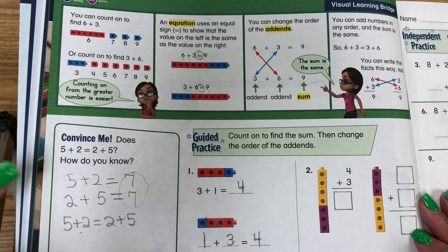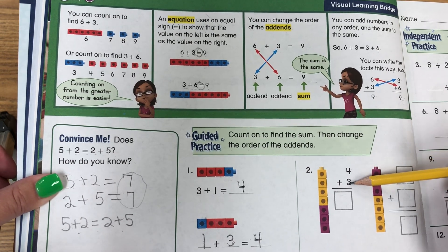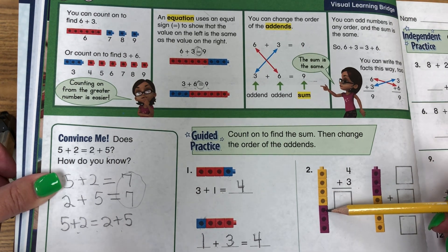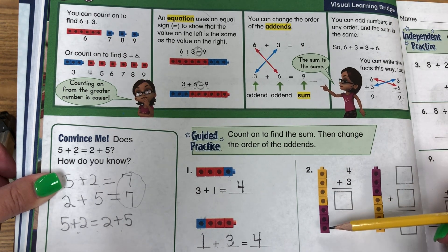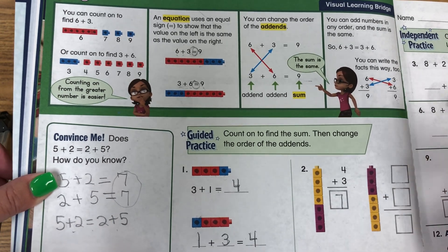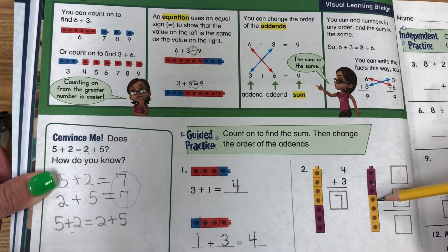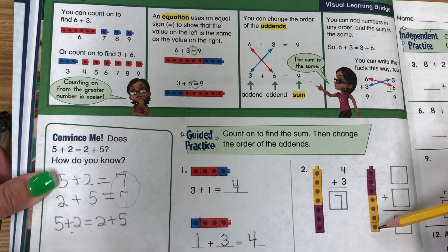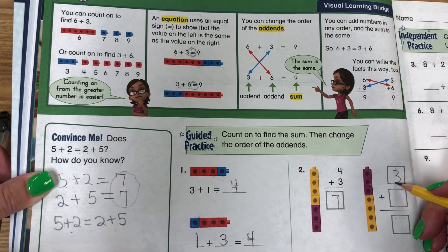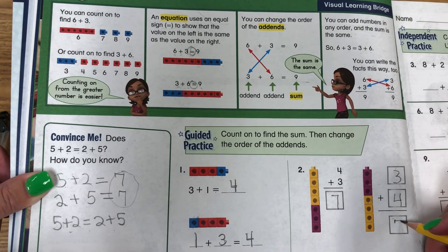Now we have them lined up. 4 plus 3: 4 yellows, 5, 6, 7. So I'm writing my 7. 3 reds: 4, 5, 6, 7. 3 reds plus 4 yellows equals 7 total.